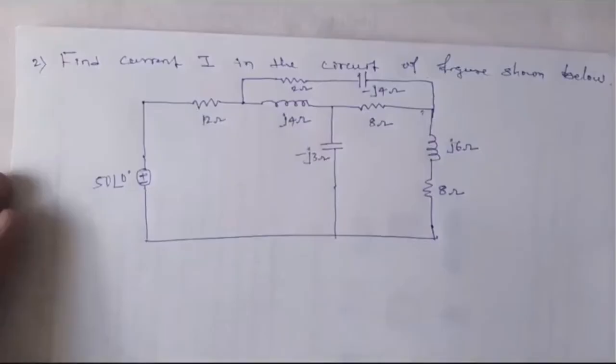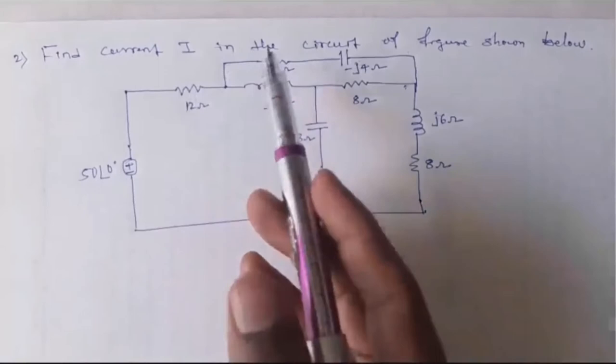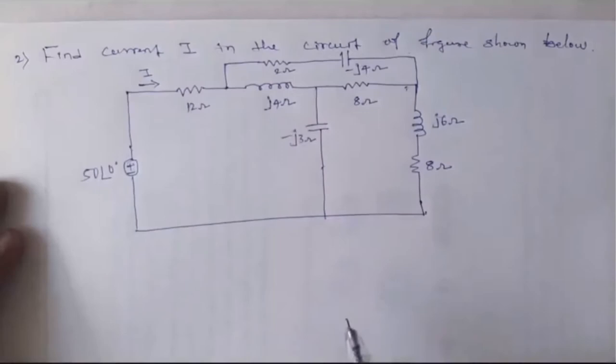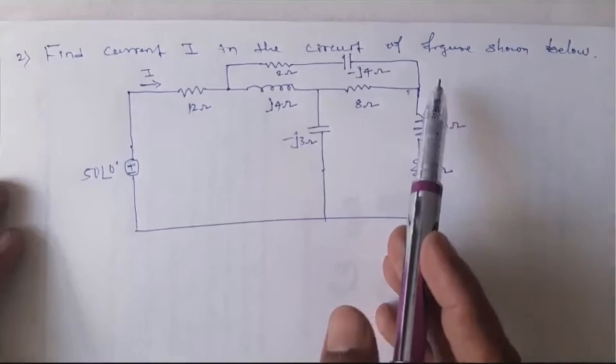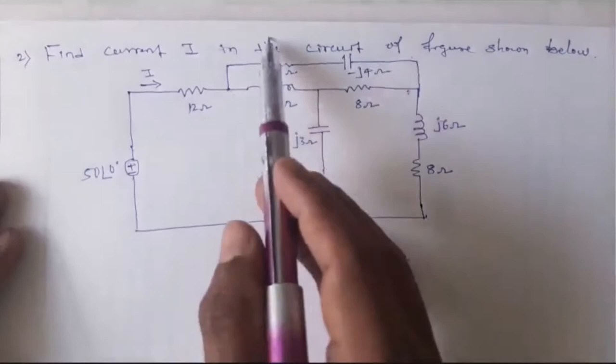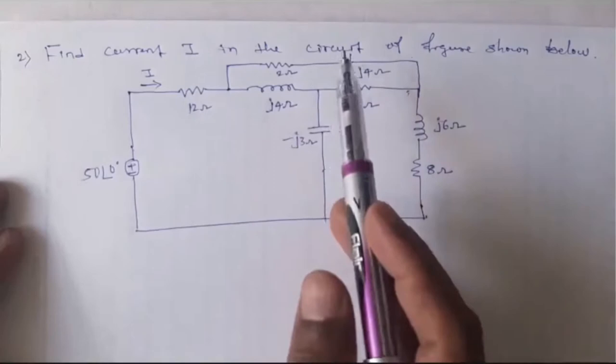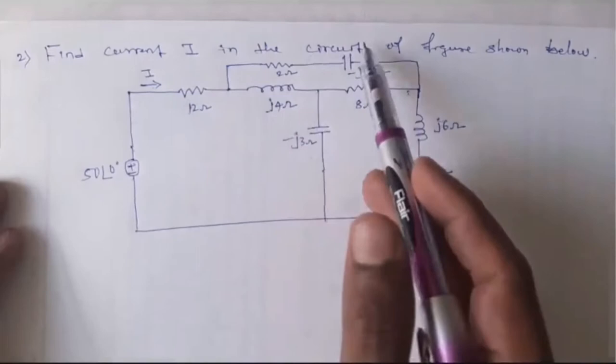The second problem: find current I in the circuit shown in the figure. To find current I, this circuit needs to be reduced. There is one impedance here, one impedance here, and one impedance combined with 2 ohm and minus j4 ohm. Looking at these three impedances, they are connected in delta form, so we need to convert this delta network to an equivalent T or Y network.